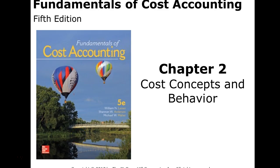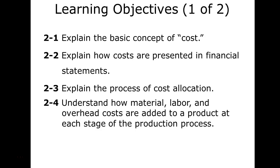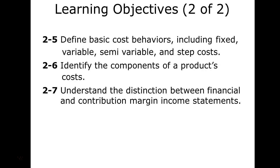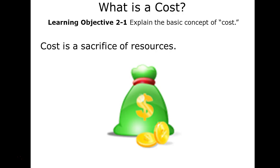Hello, once again we are in Fundamentals of Cost Accounting, Chapter 2: Cost Concepts and Behavior. In this chapter, you should be able to explain the basic concept of cost, explain how costs are presented in financial statements, explain the process of cost allocation, understand how material, labor, and overhead costs are added to a product at each stage of the production process, define cost behaviors including fixed, variable, semi-variable, and step cost, and identify the components of a product cost.